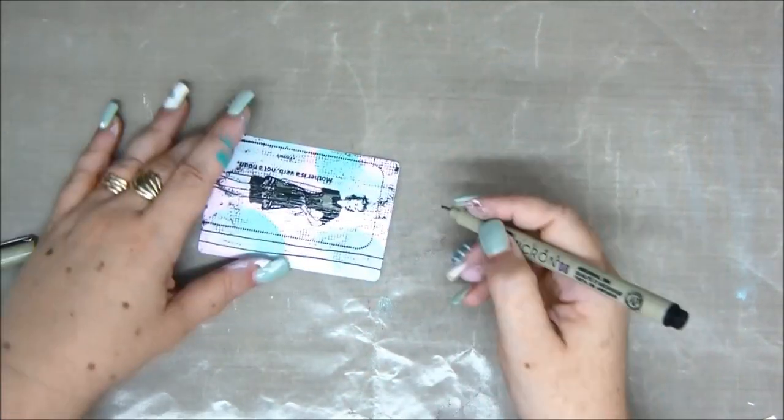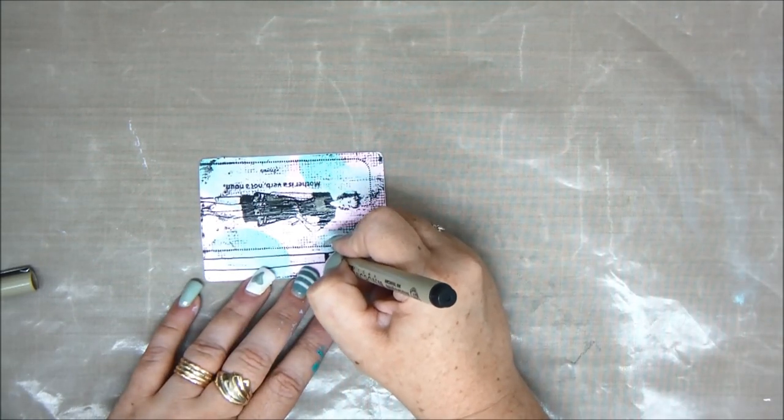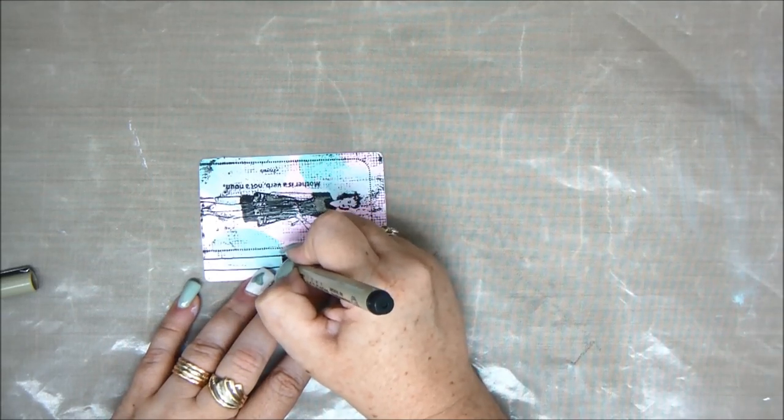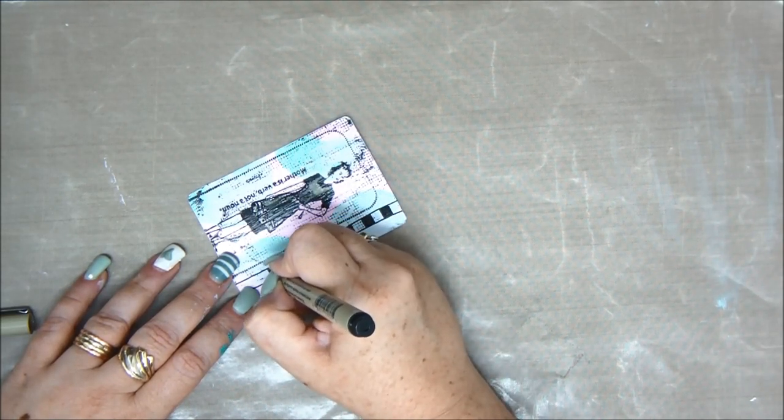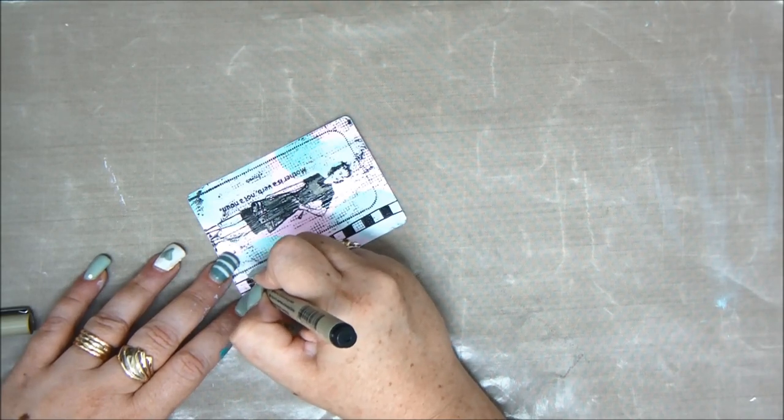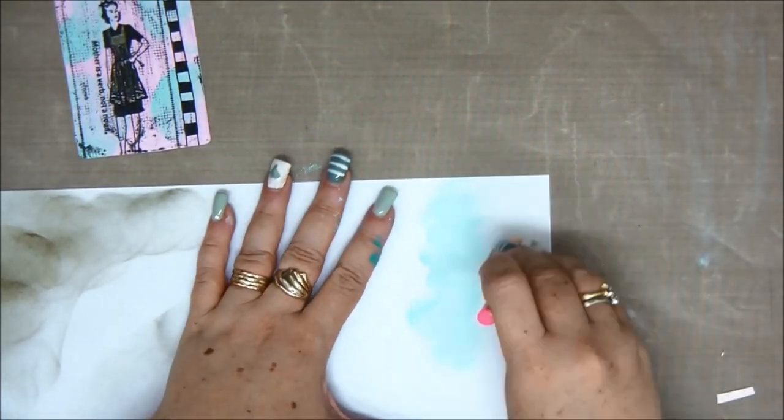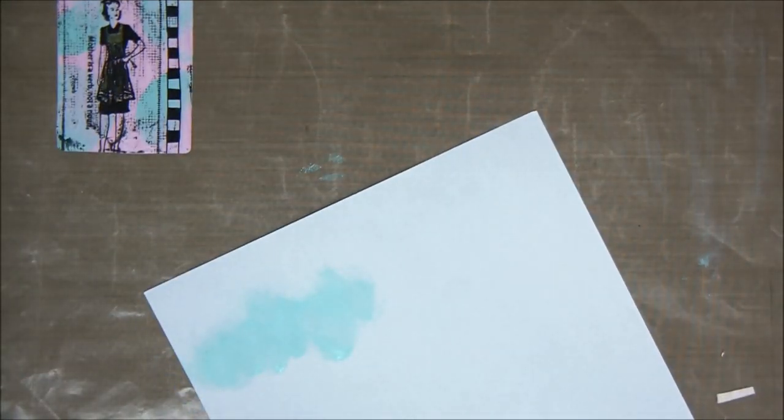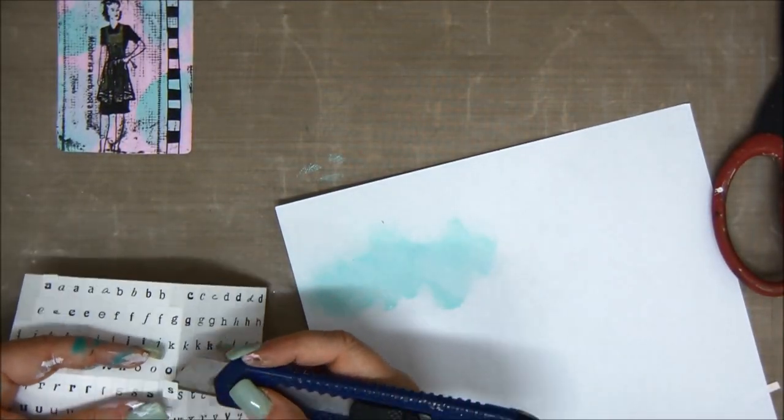I'm going to add a cute border on the side, just to add something extra to the card. Just squares, nothing fancy or complicated. You can do hearts, circles, whatever you feel like. I'm using the leftover paint on my sponge on a plain piece of white paper to create a nice background for the word I want to add to the card. I'm going to use letter stickers to spell the word strength.